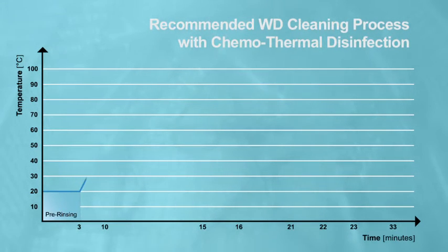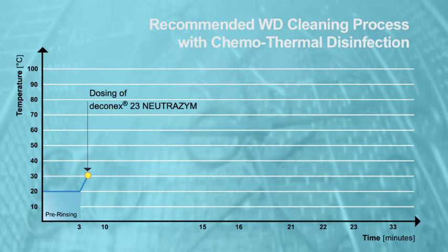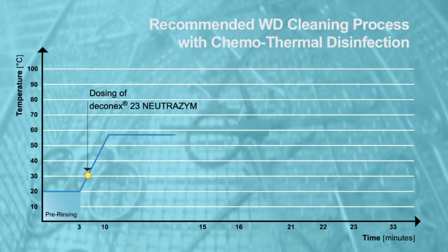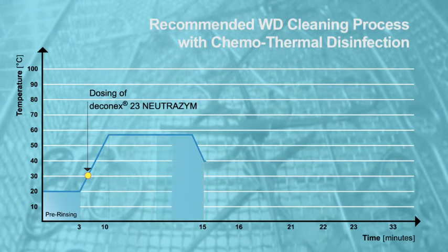Followed by the main cleaning step, consisting of the dosing of Deconnex 23 Nutrizyme at approximately 30 degrees Celsius, and a subsequent active cleaning for five minutes at 58 degrees Celsius.